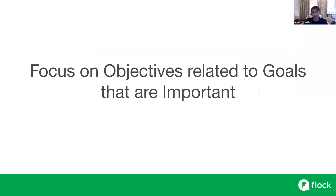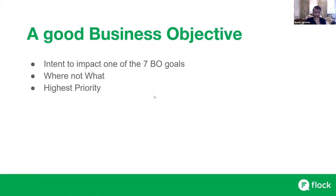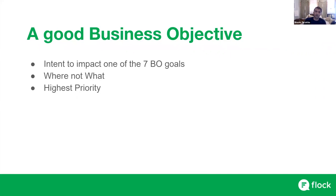So in quick summary: getting this process right is important because we'll end up where we look and the entire organization is going to be aligned around our OKRs, and we'll have a very high reaction time to change. So if we get them right, it's very powerful — your entire team and company is working to achieve the same exact thing. If you get it wrong, we either end up in the wrong place or we waste time and have to start steering the ship in a different direction. A good business objective is: an intent to impact one of the seven goals; a where, not a what — where do we want to go as a team, not what are we doing to get there; and always the highest priority objectives that will make a material difference.